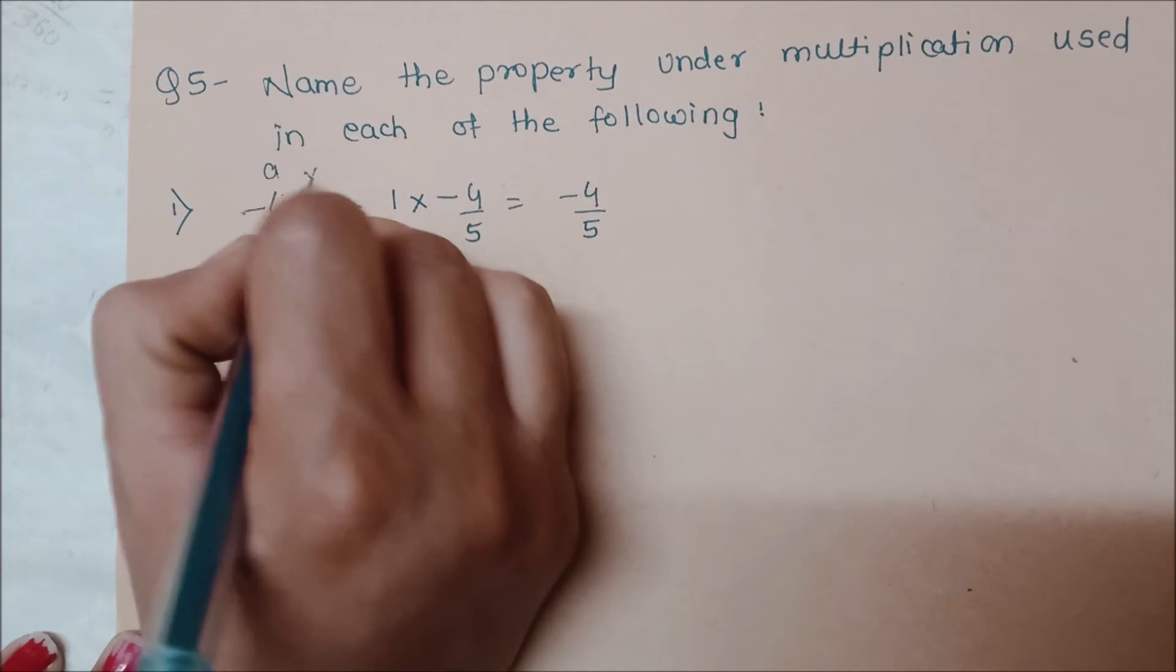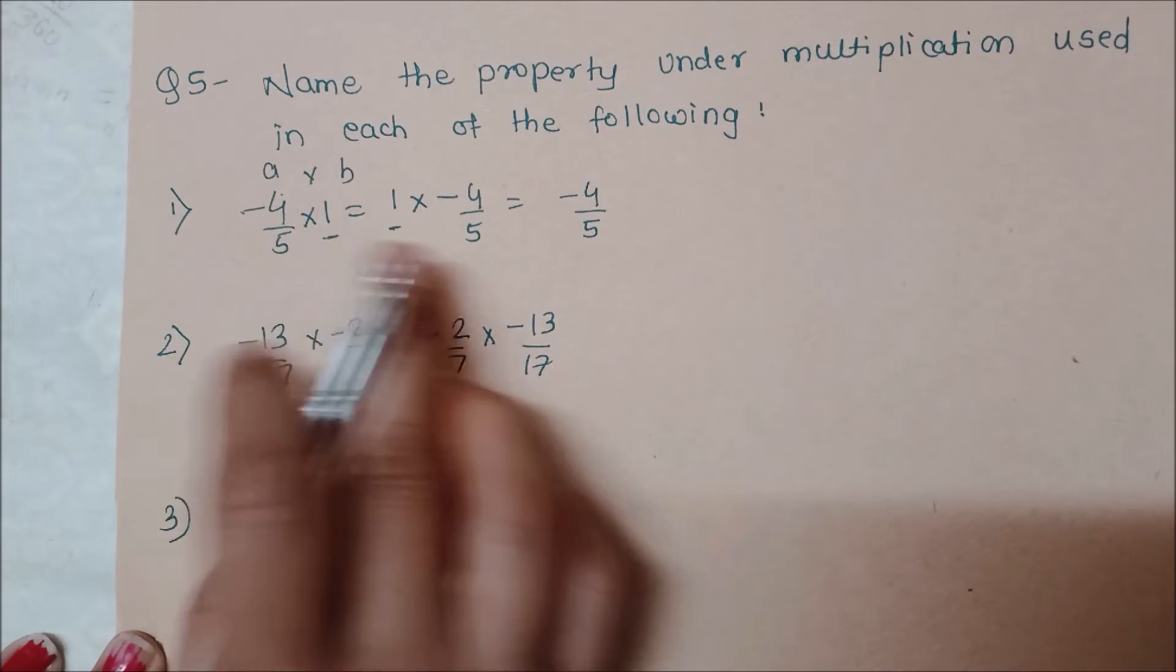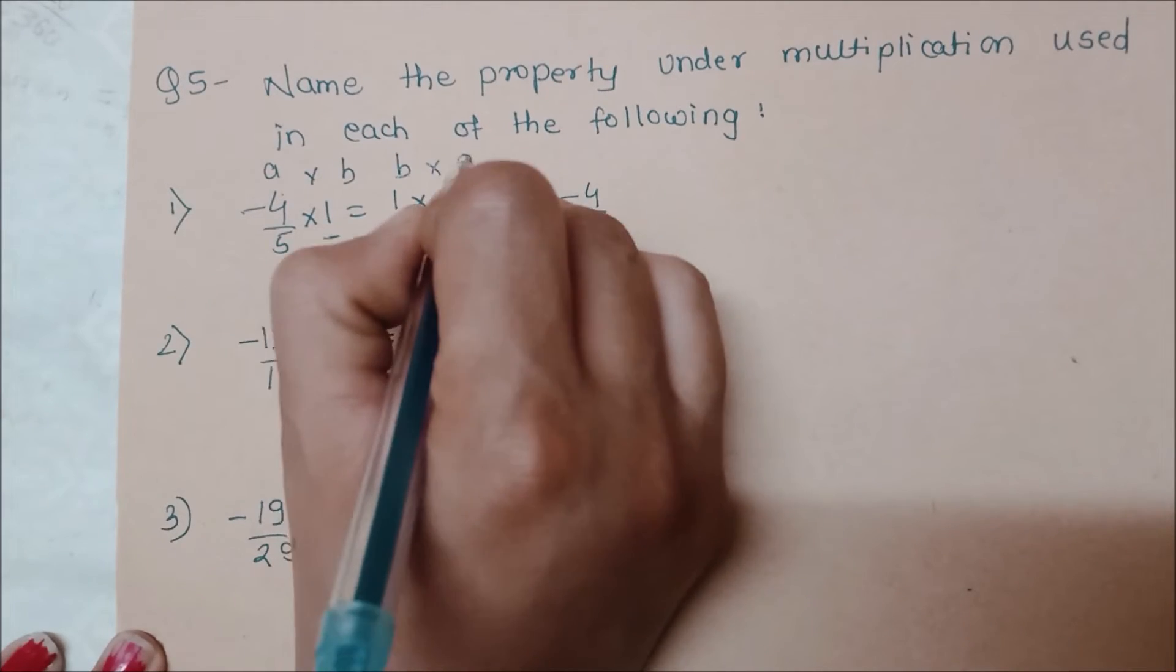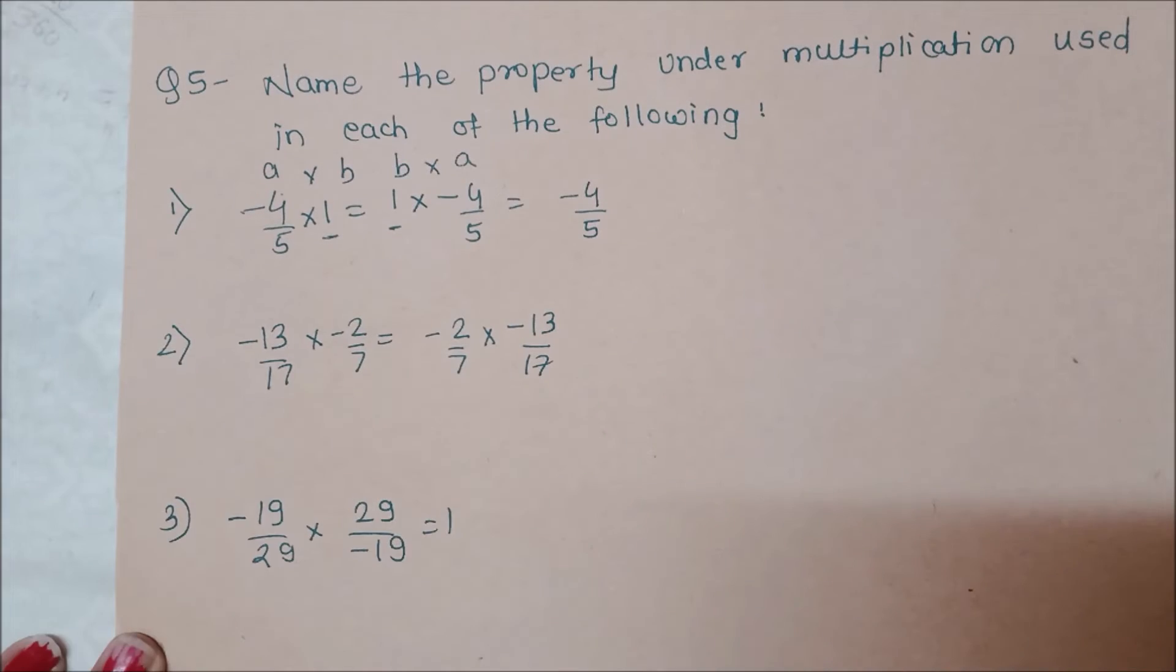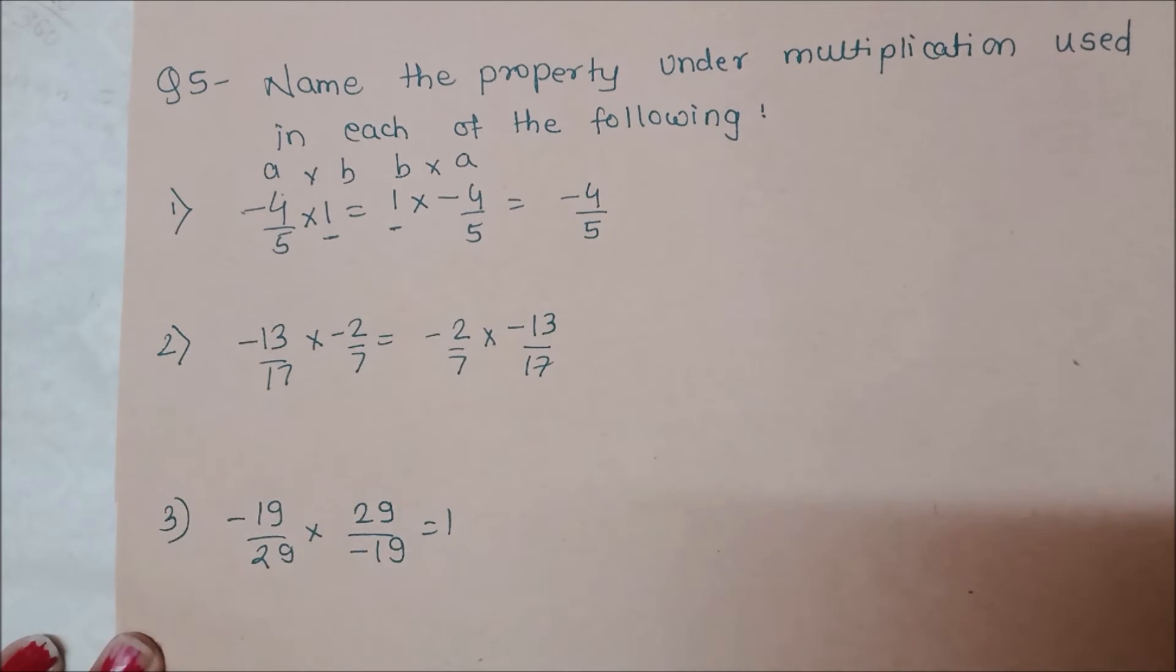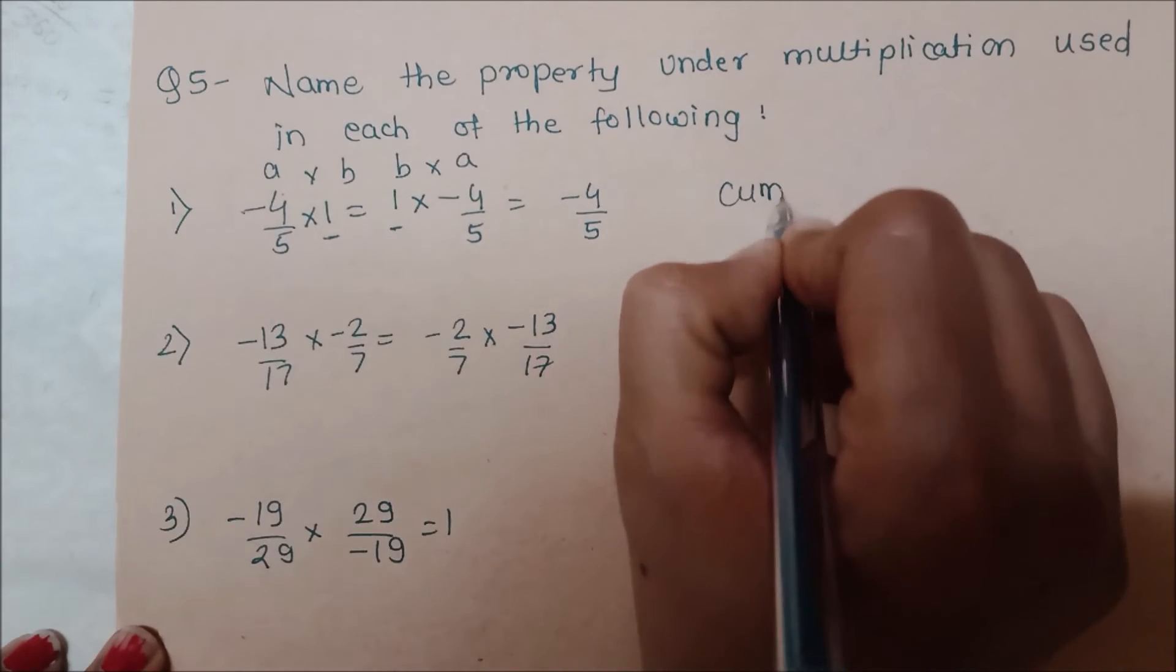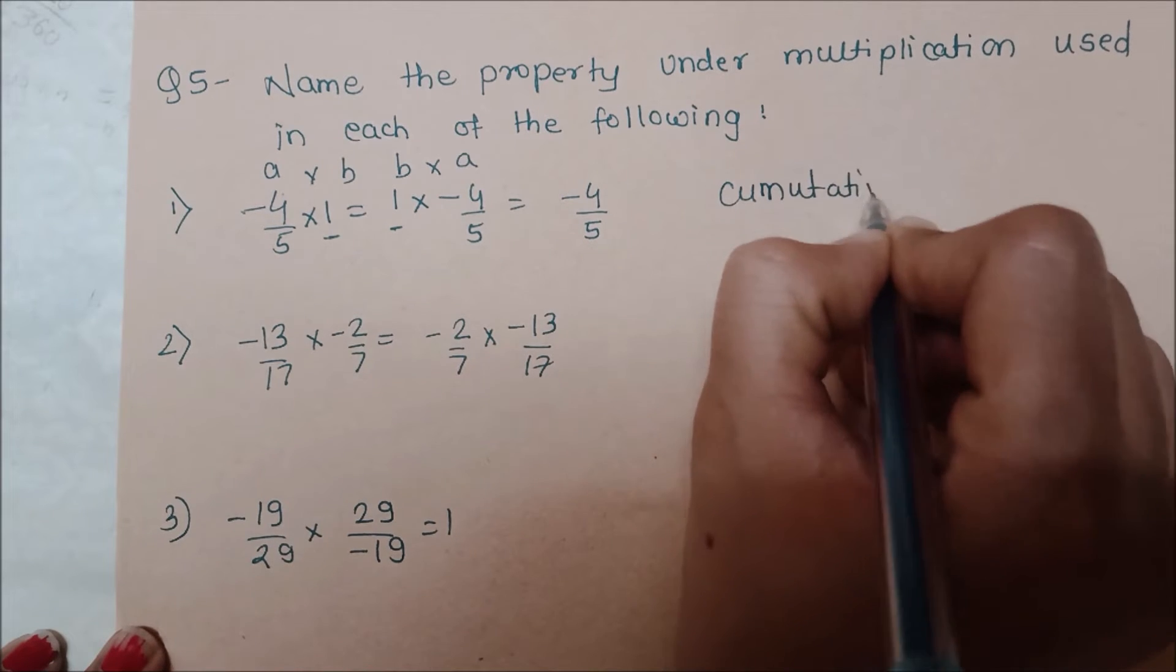If we have A into B, here we can write A into B or B into A. We have the same answer. So here is the situation when A into B is equal to B into A. This is commutative property.